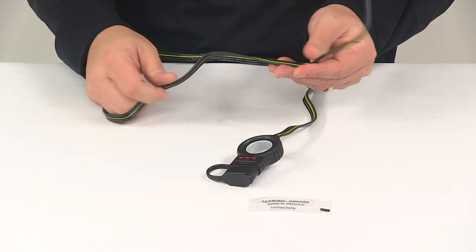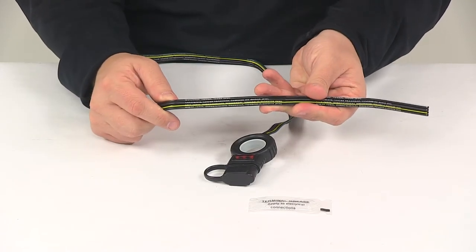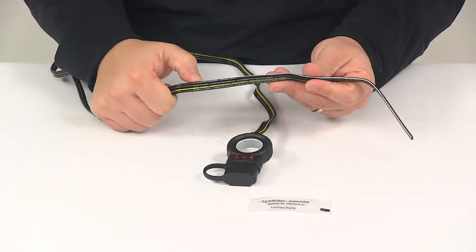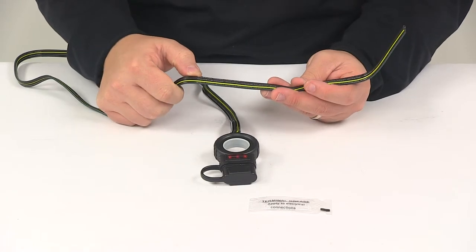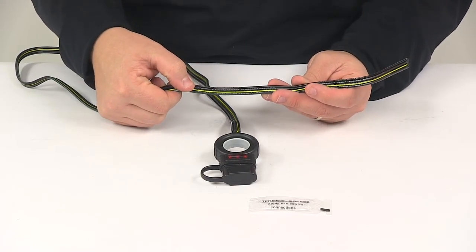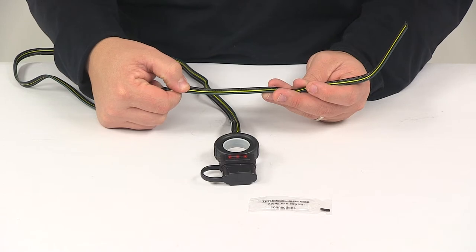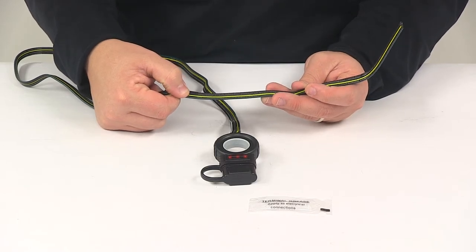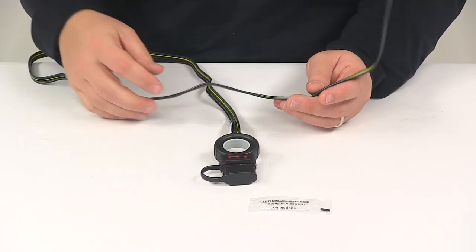And when it comes to the wiring configuration, it's all labeled right there. Basically, the black wire with the white stripe is your ground. Brown is for tail lights. Green is for right turn and brake. Yellow is for left turn and brake.